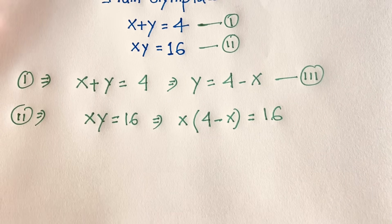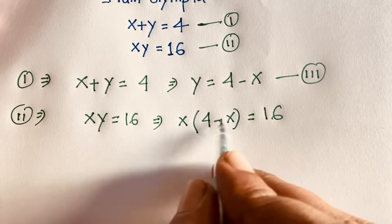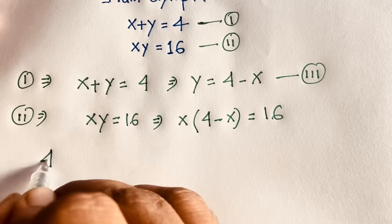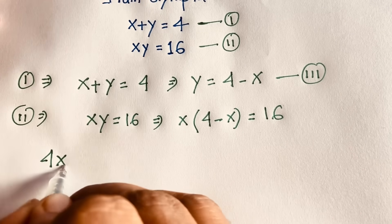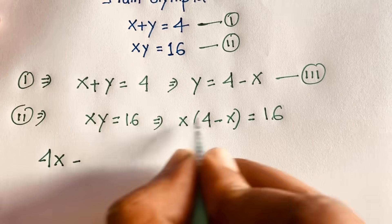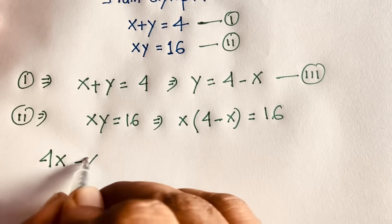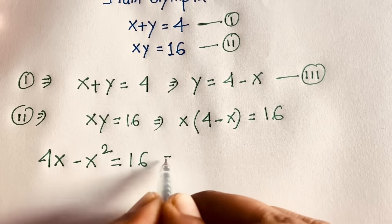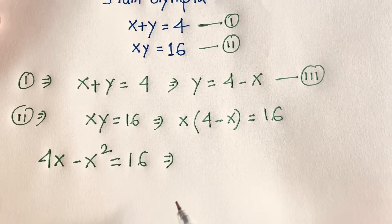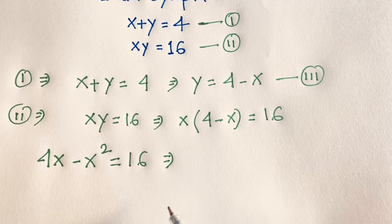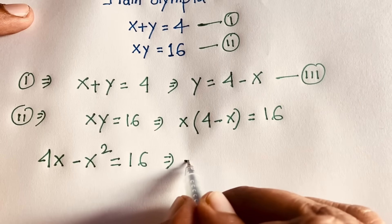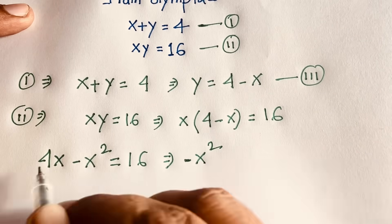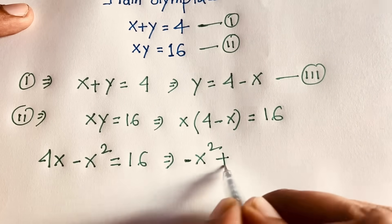Multiplying out: 4 times x minus x times x gives 4x minus x squared equals 16.